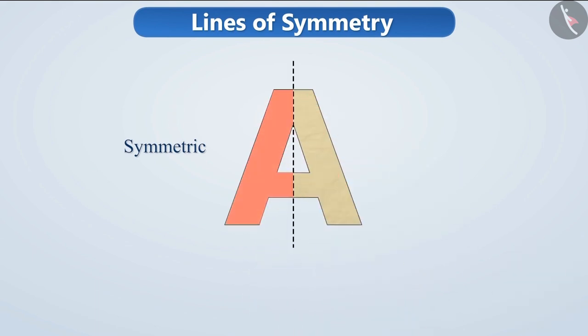Absolutely correct. If we keep the left half of it on the right half, then they are seen to overlap each other perfectly. This shows that they are reflections of each other. Therefore, we can say that the letter A is a symmetric letter.